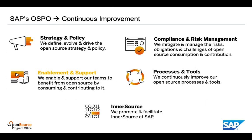Our OSPO is responsible for five major areas. The first is to define, evolve and drive our SAP open source strategy and policy. The second is to manage open source compliance and risks. The third is to enable and support our developers to consume open source and to contribute to open source. This point is extremely important to us because we see ourselves as a service team, which tries to remove all the friction from our processes so that development teams can fully concentrate on their development tasks.